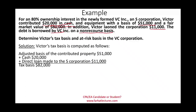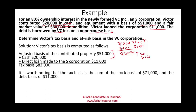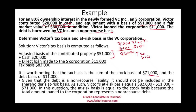The tax basis of $82,000 has two components: stock basis of $71,000 ($51,000 + $20,000) and debt basis of $11,000. Together they give a tax basis of $82,000. To compute the at-risk basis, we deduct the non-recourse loan of $11,000. Therefore, Victor's at-risk basis is $82,000 minus $11,000, which equals $71,000. The at-risk amount equals the stock basis because the entire $11,000 loan to the corporation represents non-recourse debt.